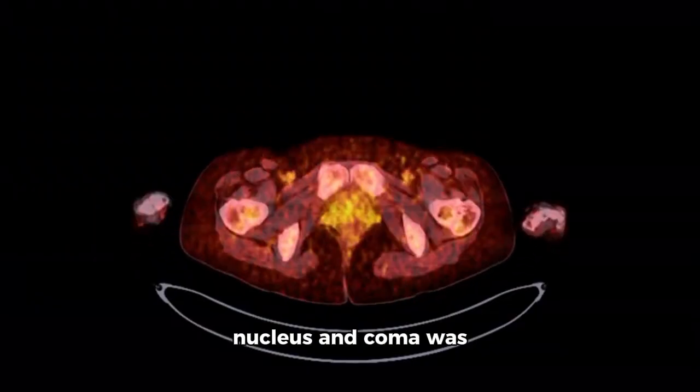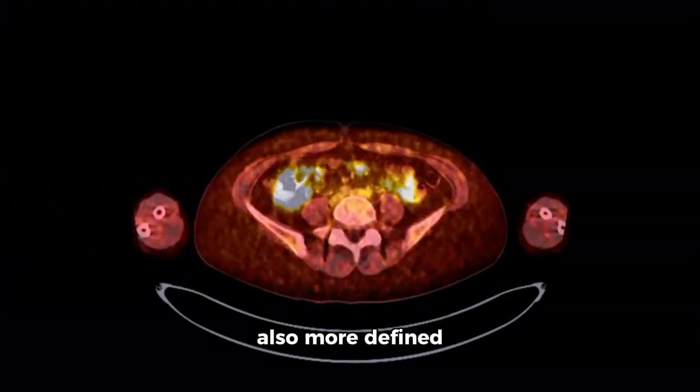The boundary between nucleus and coma was also more defined than expected. Instead of blending gradually, Webb's resolution revealed a clear transition zone.